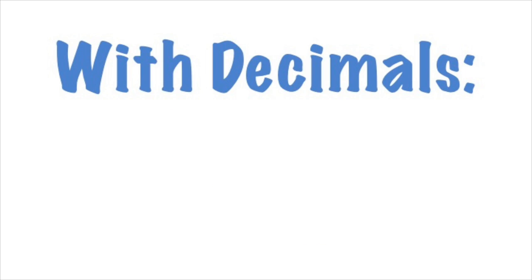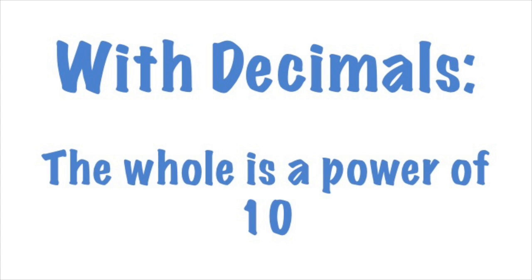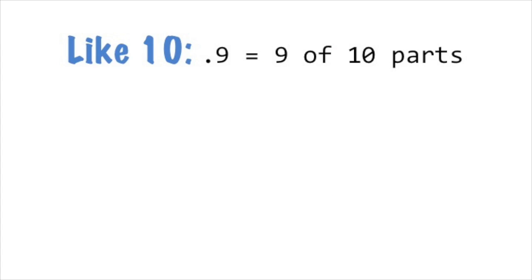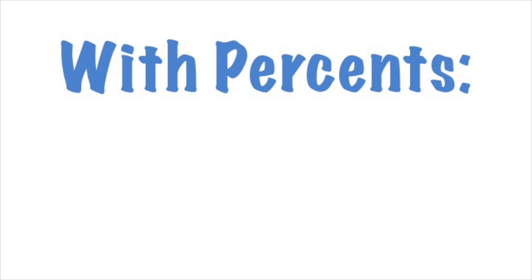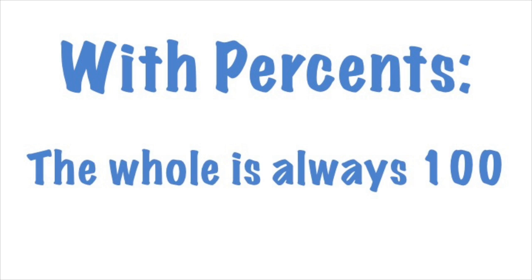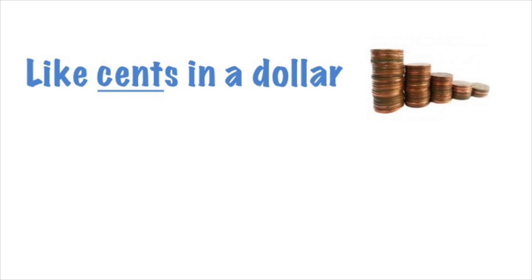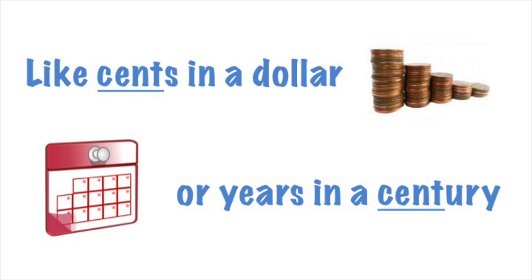With decimals, the whole is a power of 10, like 10, or 100, or 1,000, etc. And with percents, the whole is always 100, like cents in a dollar, or years in a century.